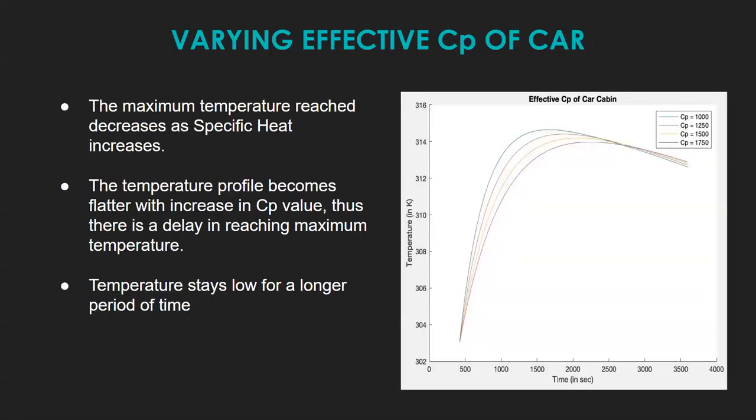Coming to the effective specific heat of the car. As we vary the specific heat of the car, we see that maximum temperature attained decreases as specific heat increases. Temperature profile becomes flatter at higher values of Cp, which explains the delay in reaching maximum temperature. Temperature also stays low for a longer period of time.